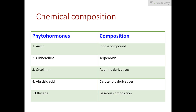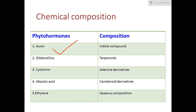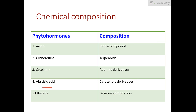Next, we will check the chemical composition of the PGRs. As mentioned earlier, they have diverse chemical compositions. Auxins are made up of indole compounds — indole is an aromatic cyclic compound from chemistry. Gibberellins are made up of terpenoids. Cytokinins are made up of adenine derivatives. Abscisic acid is made up of carotenoids. And ethylene, or C₂H₄, is a gas and also acts as a gaseous hormone.